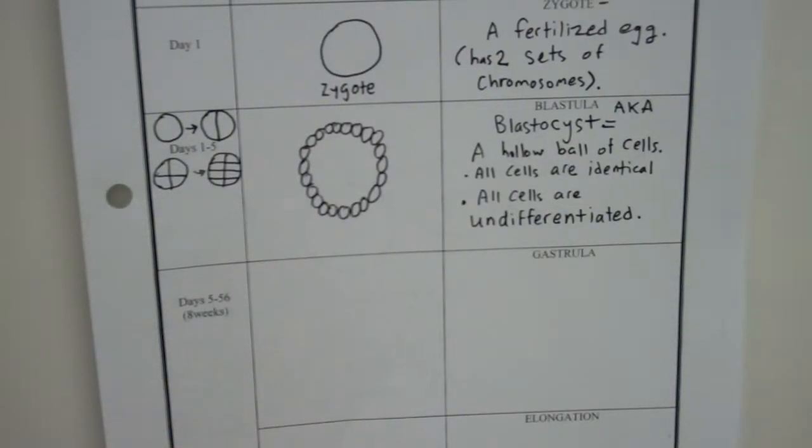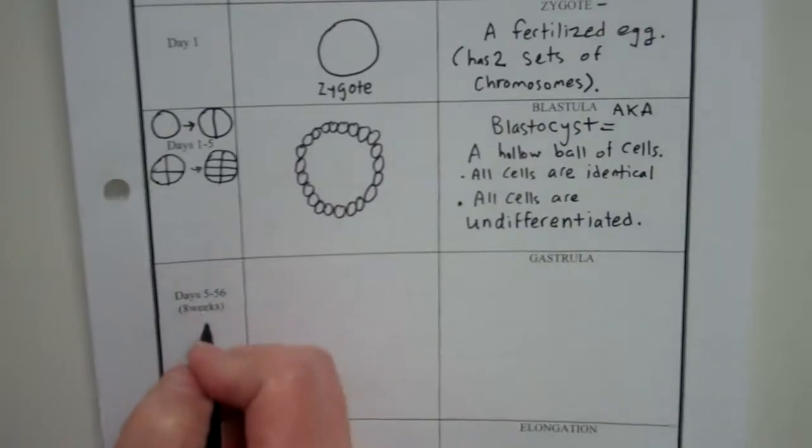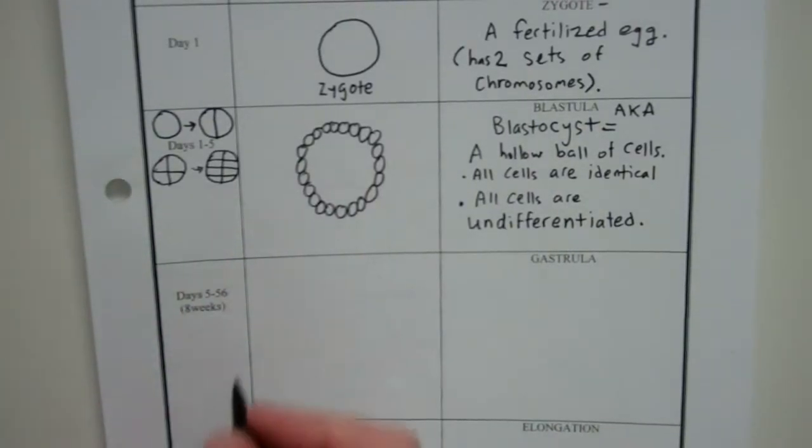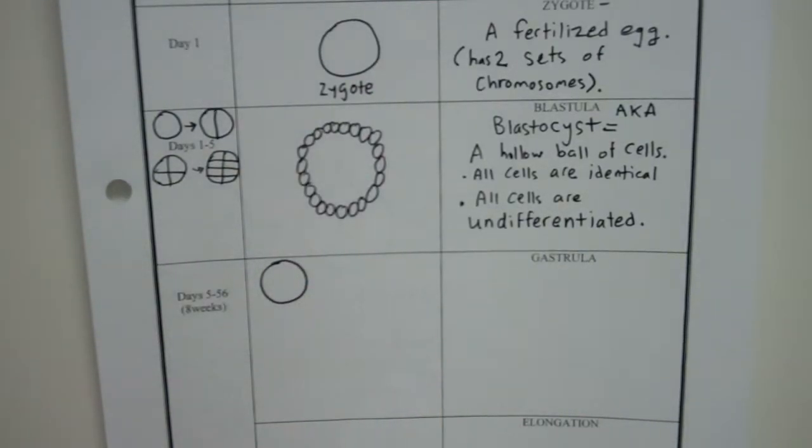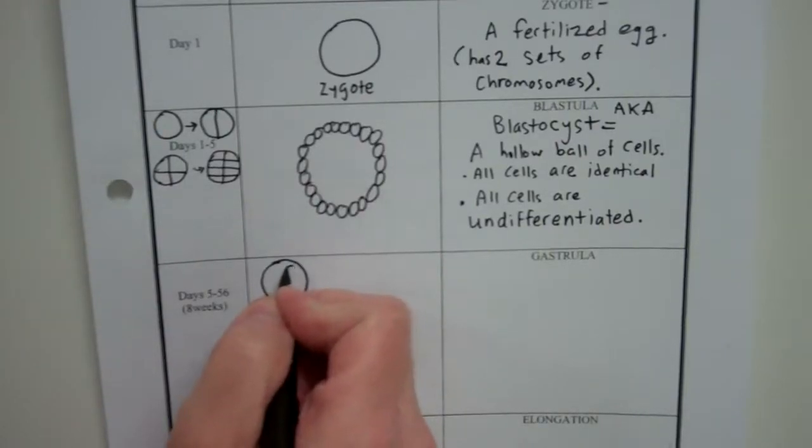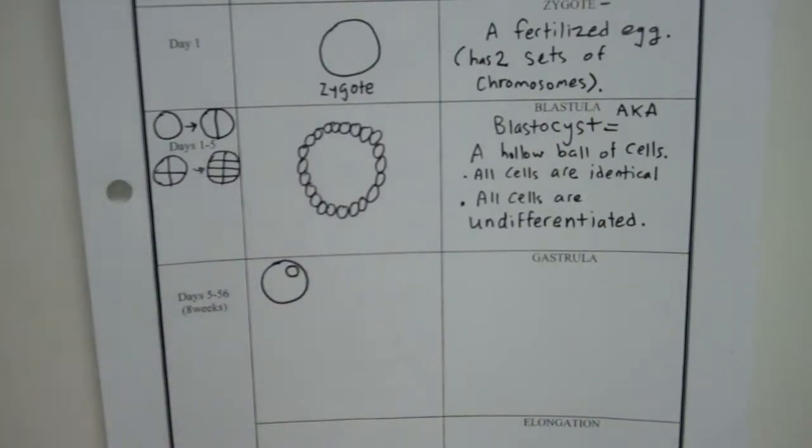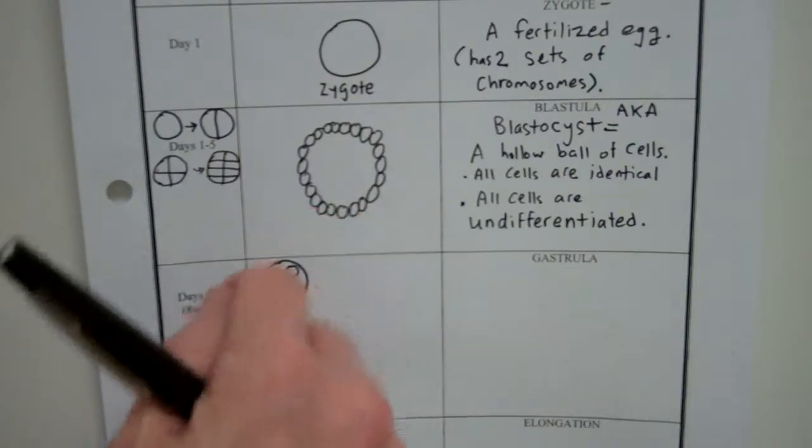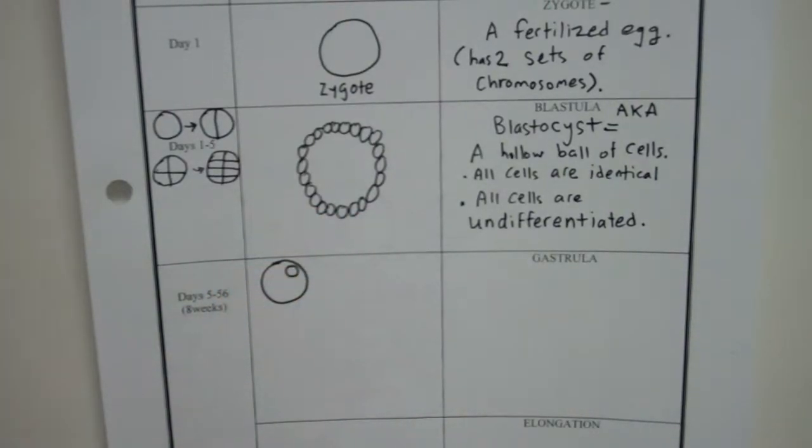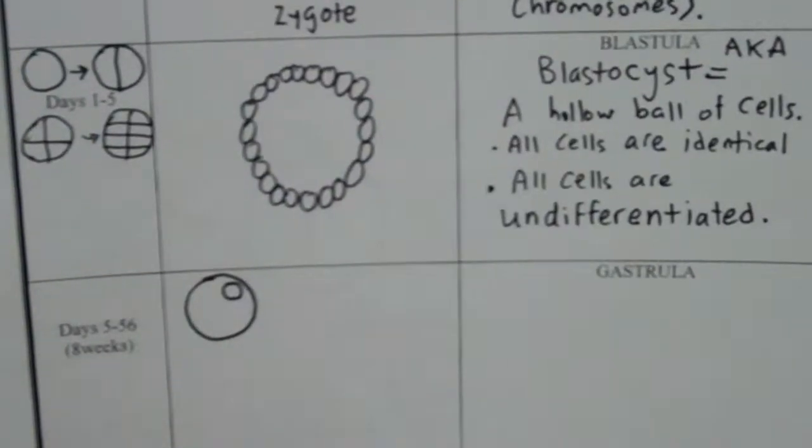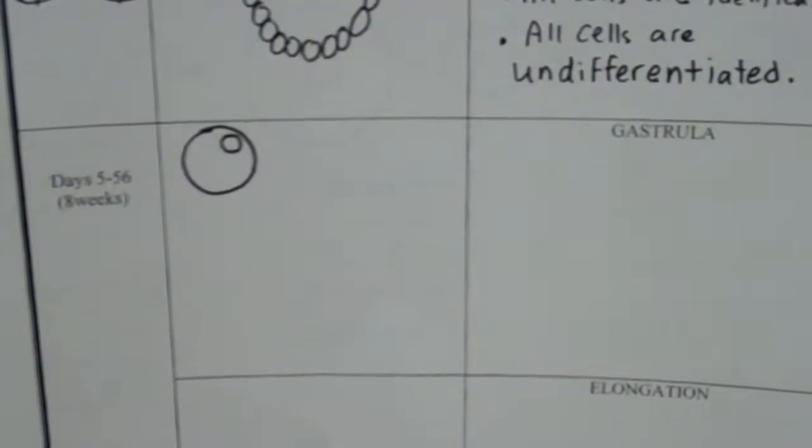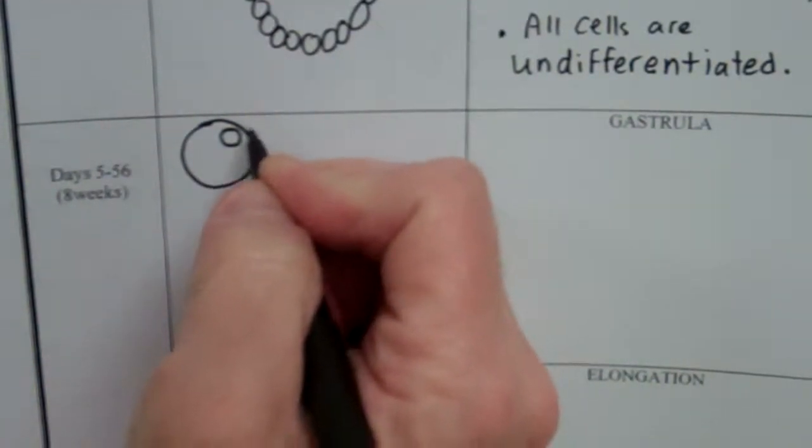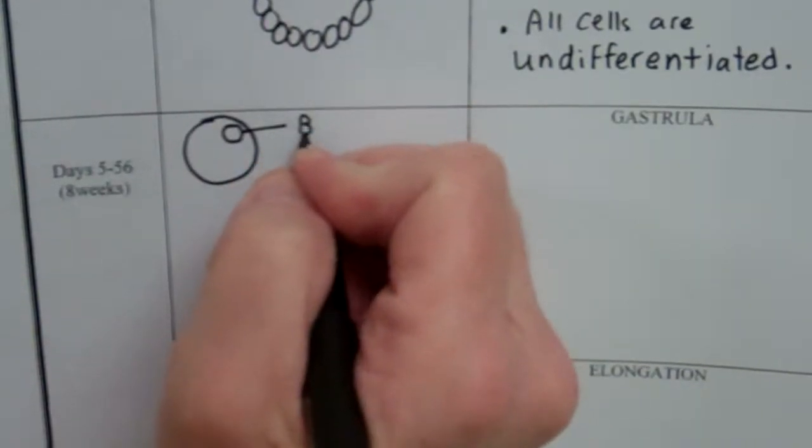So now we're going to start with our little blastocyst. And days 5 through 56, we're moving on. I'm going to draw a little picture of this cell. So here's the ball of cells. And there starts to be a little indentation on the surface of that cell. The cells are going to start migrating and pushing in. So when I tell my students that it looks like an olive, it does kind of look like an olive.